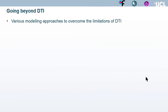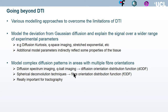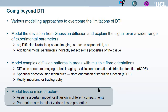In the literature, a variety of modeling approaches have been proposed to overcome the limitations of DTI. Some approaches model the deviation from Gaussian diffusion and explain the signal over a wide range of experimental parameters, with additional model parameters indirectly reflecting tissue properties. We can also model complex diffusion patterns in areas with multiple fiber configurations, or try to be more specific to tissue microstructure by assuming certain models for diffusion in different compartments and estimating parameters reflecting different tissue properties.